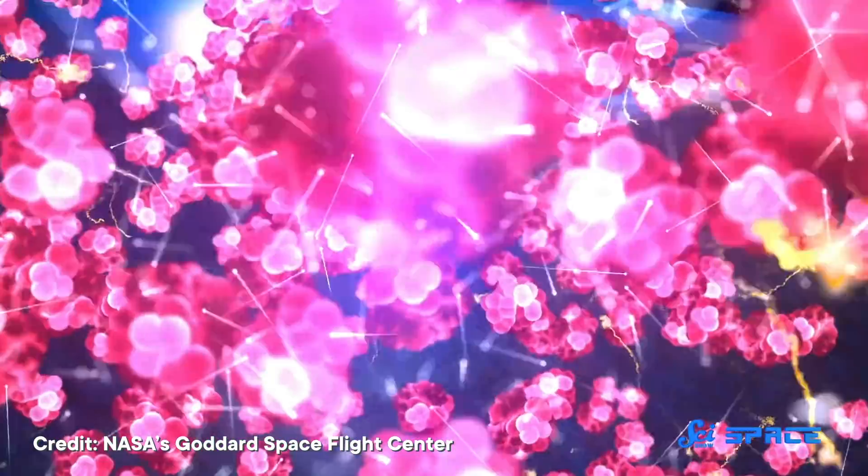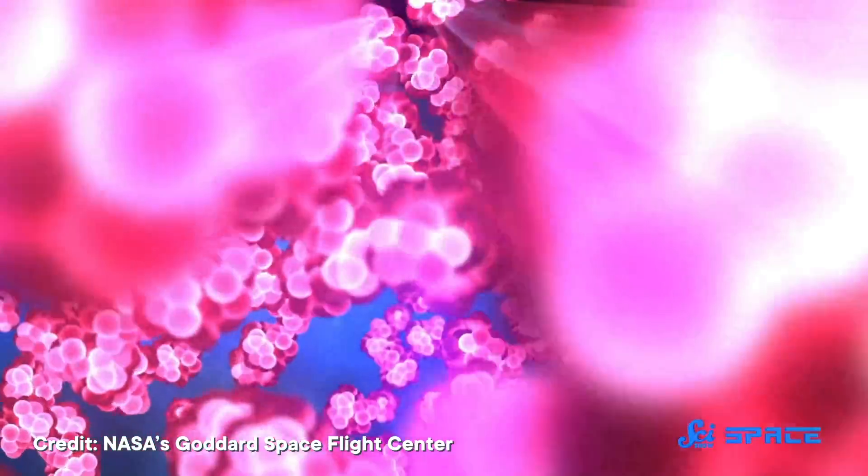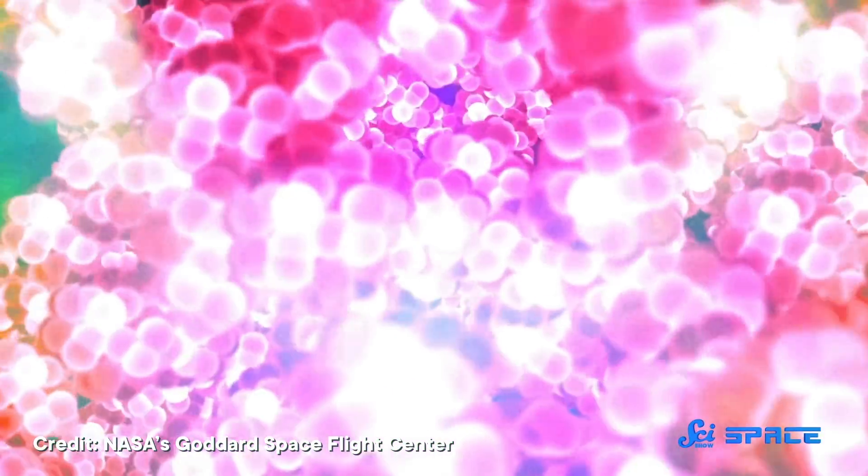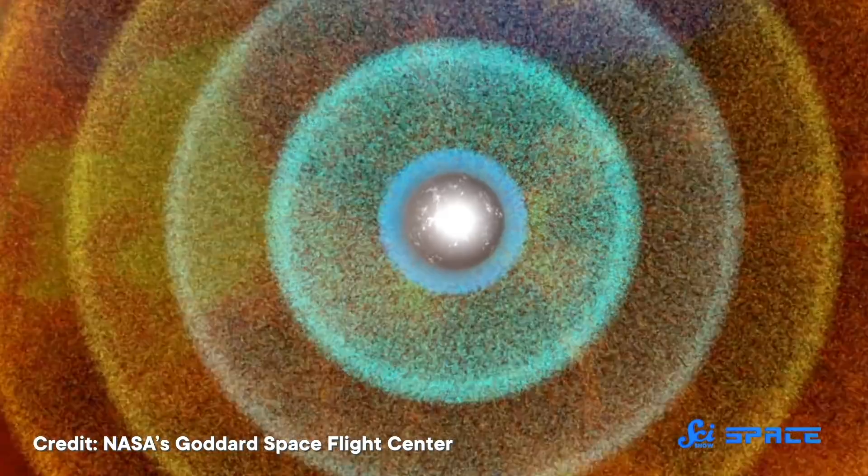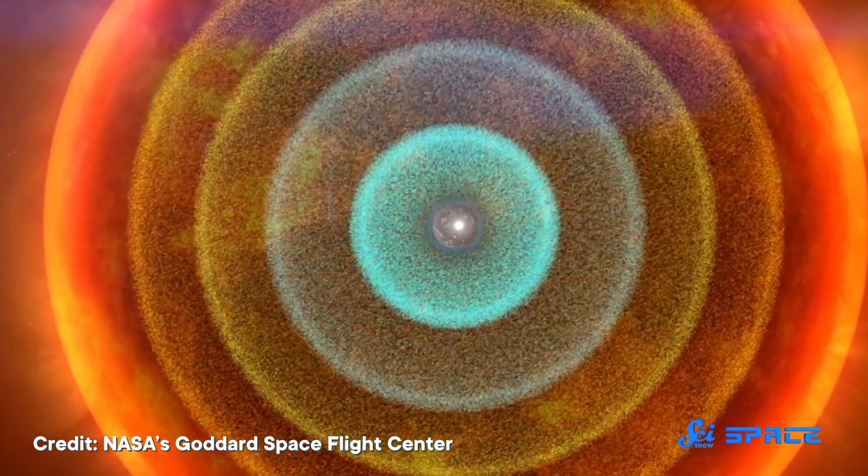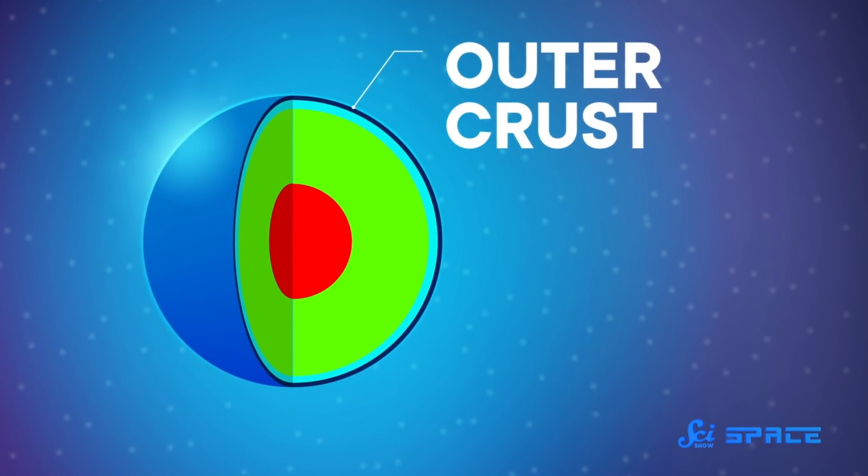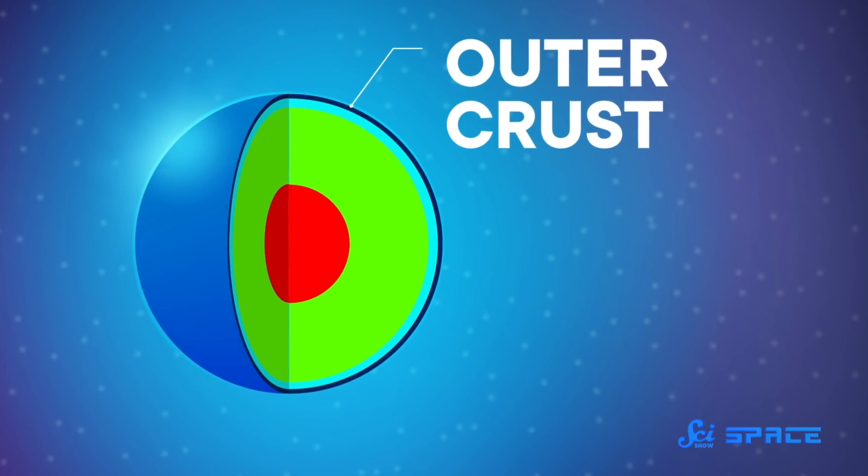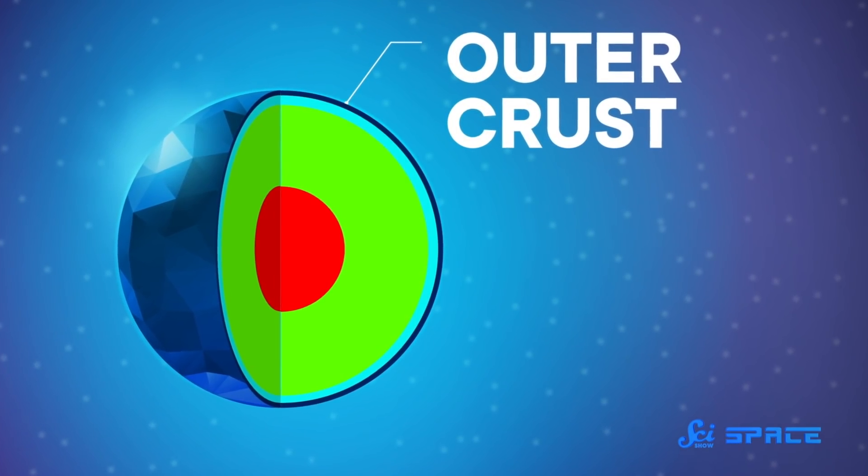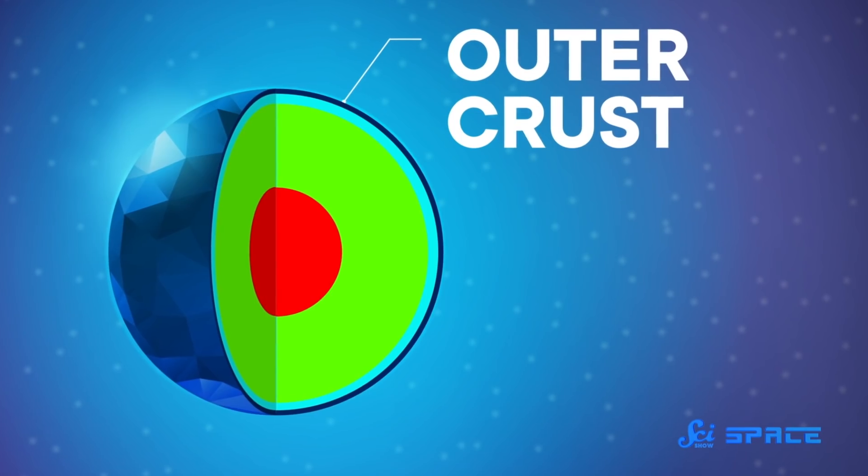In neutron stars, gravity is so strong that it doesn't just collapse the space between atoms, it collapses the atoms themselves. When that happens, electrons merge with protons in the nucleus to form neutrons. And what's left is a star made almost entirely of neutrons. In these stars, even the outer layer is denser than the core of a white dwarf. And there, atomic nuclei freeze into a crystal lattice a lot like what is in a frozen white dwarf.